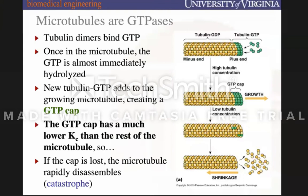As the assembly continues, more GTP-tubulin adds on creating the cap, but they're also still hydrolyzing GTP to GDP. You get a longer filament, but over time as there's less tubulin available, you'll eventually use up what's available and no longer have a GTP cap.